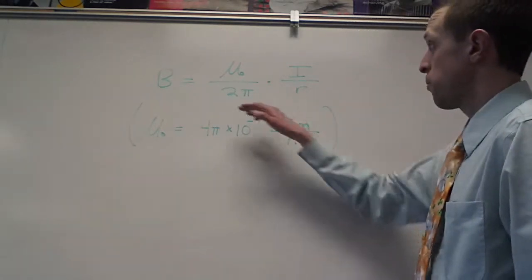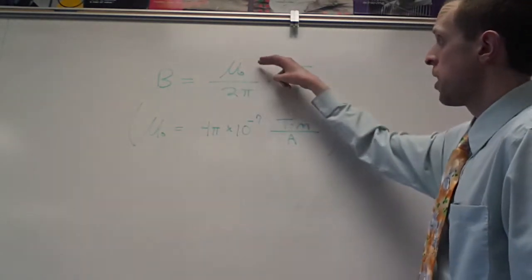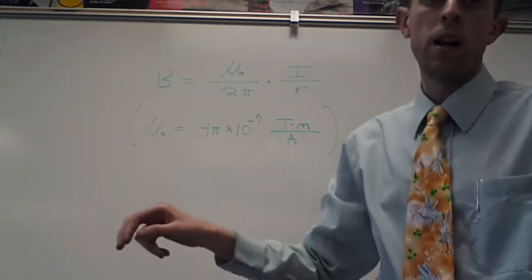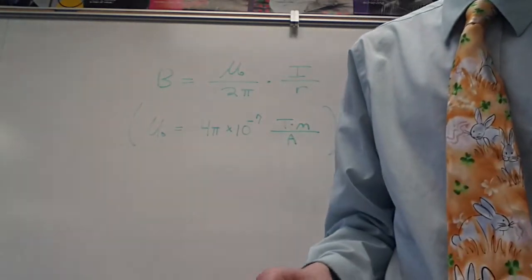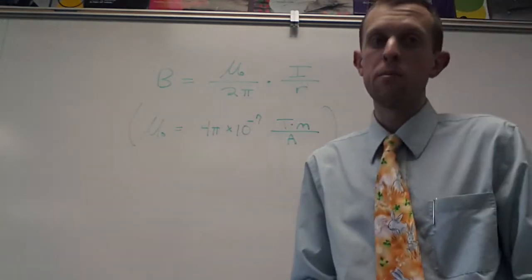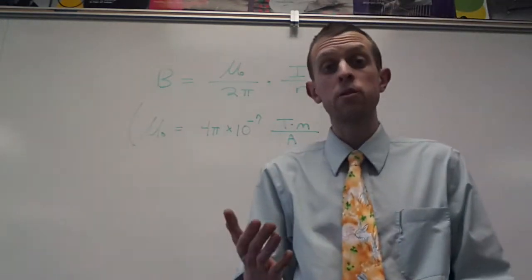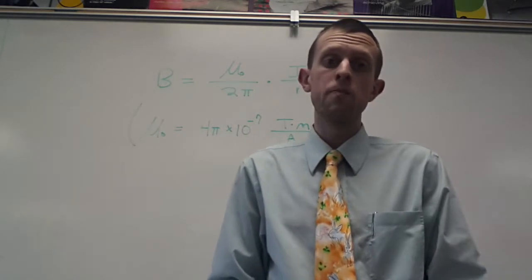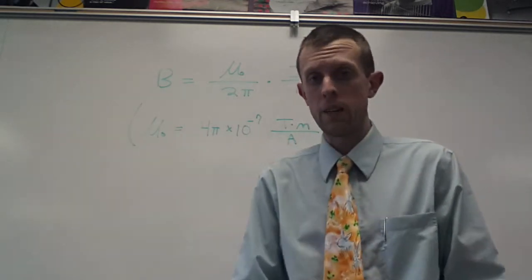And so the magnetic field, we can calculate that strength as mu-naught, which is the vacuum permeability, not the vacuum permittivity which we used for electric fields, but the vacuum permeability, which is for magnetic fields.